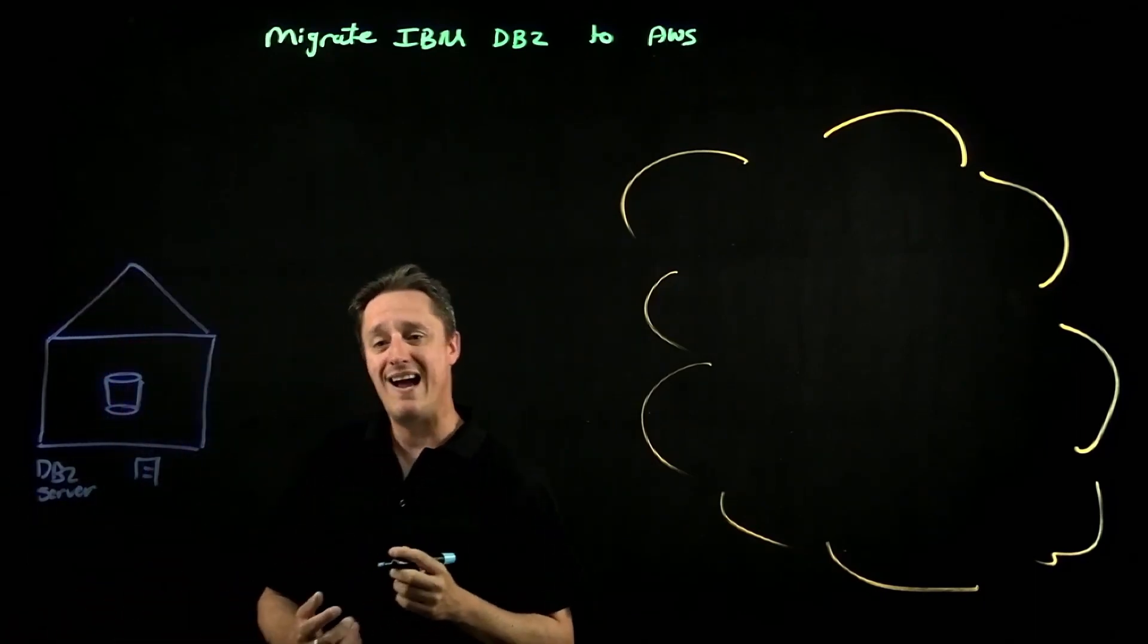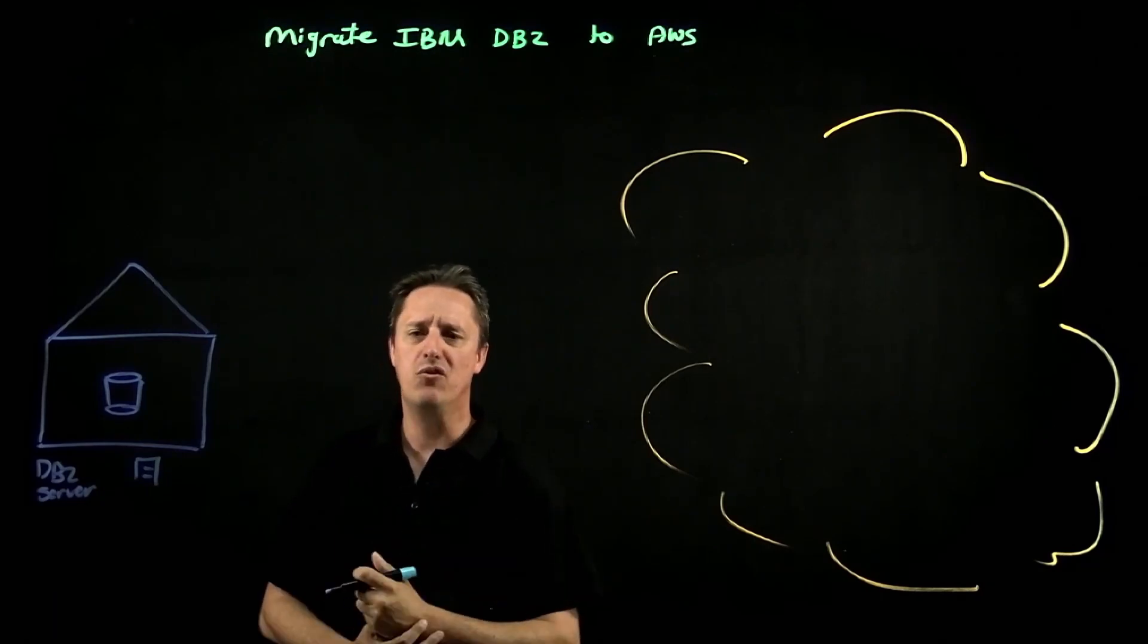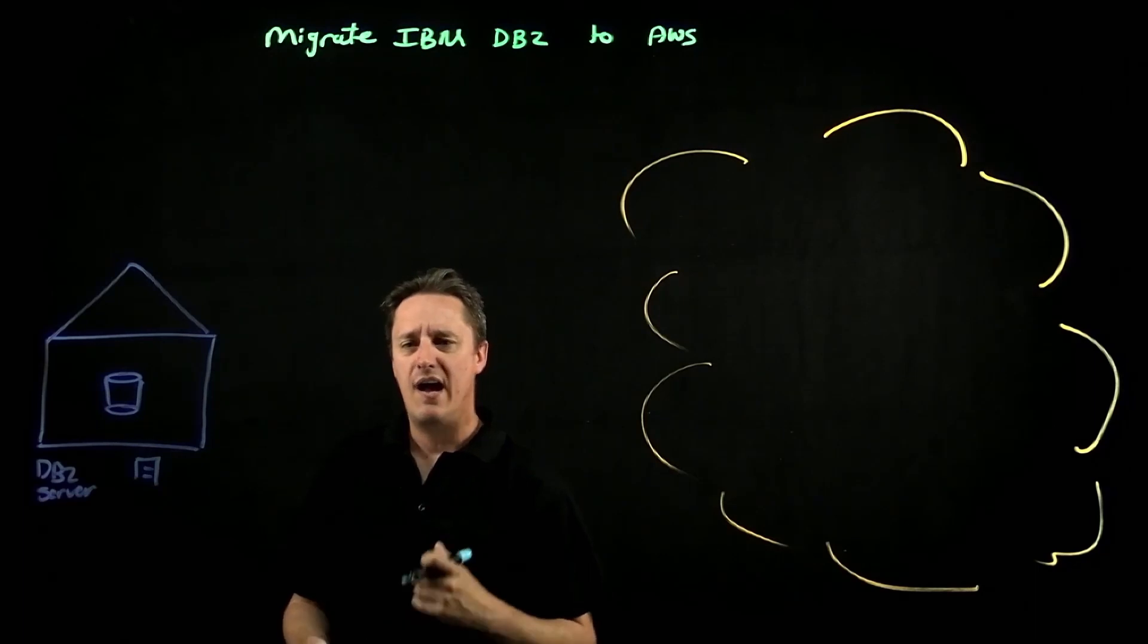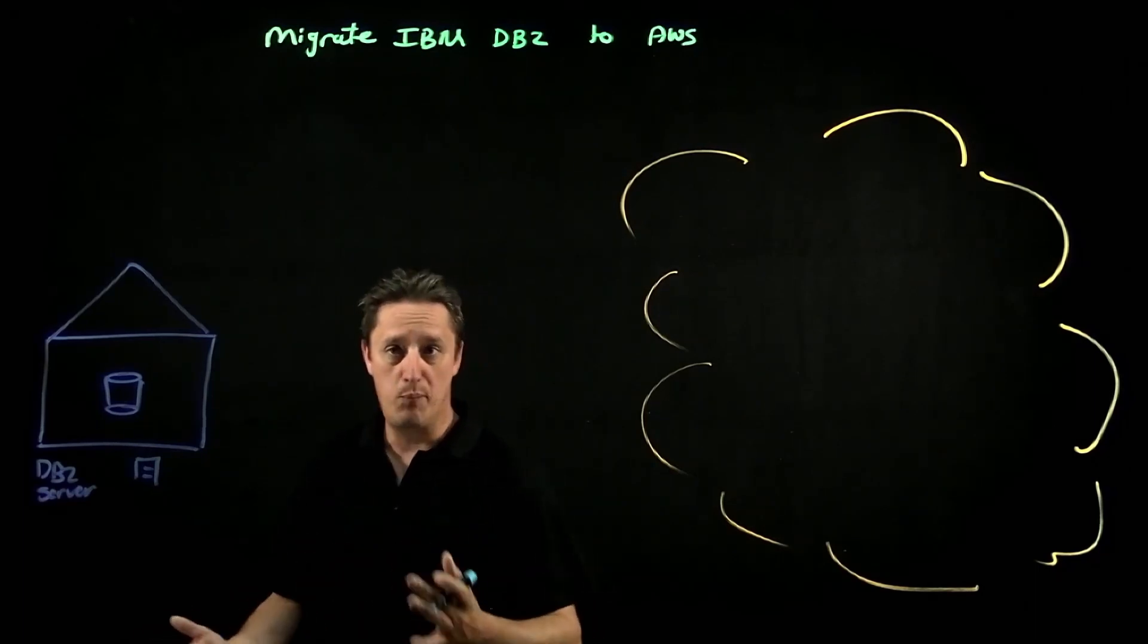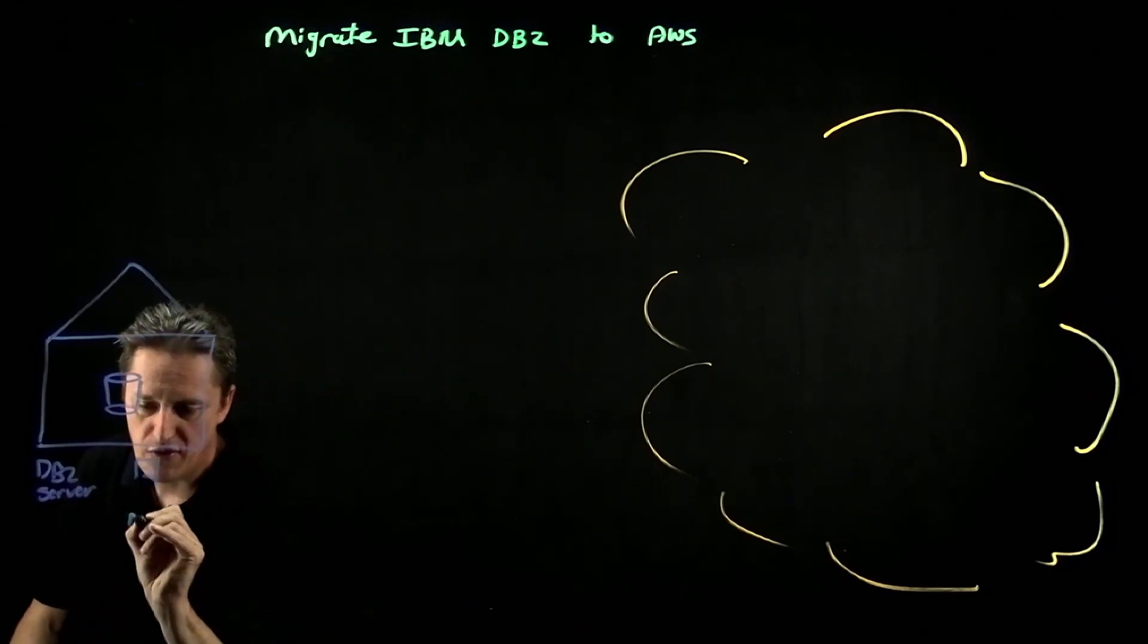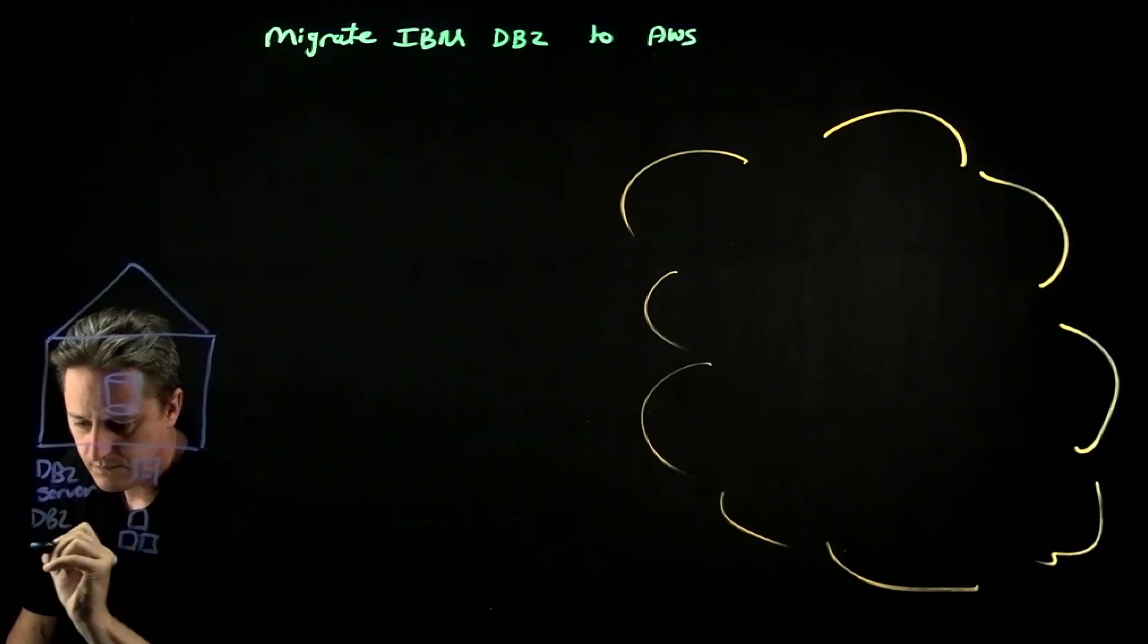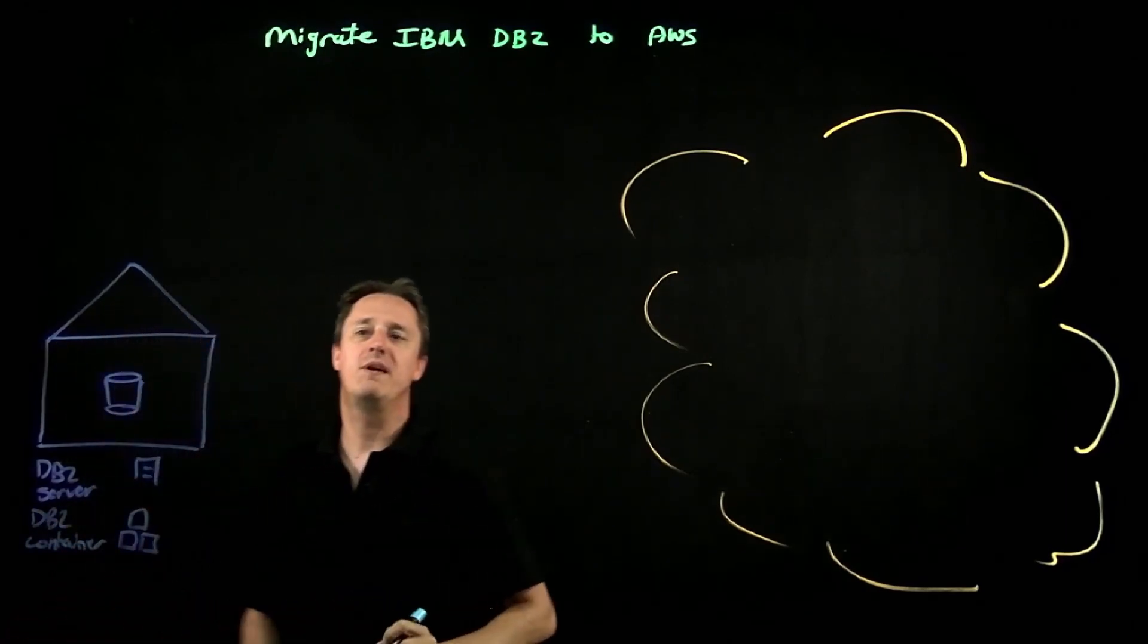Likewise, that might be a containerized version of DB2. Maybe they're using some sort of Cloud Pak infrastructure like Cloud Pak for data and there is DB2 running as a containerized workload on top of OpenShift. So that could be a container platform supporting DB2.